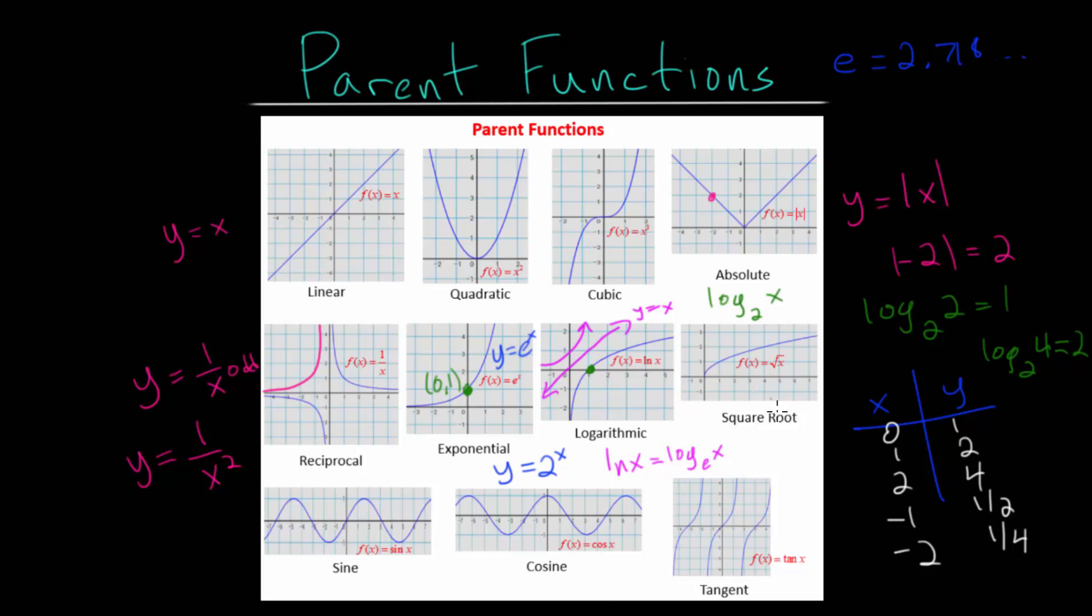And then we come to the root functions. This is the square root function. Notice that it's not defined for negative values since those outputs would be imaginary numbers. And on the xy coordinate plane, we cannot graph those imaginary numbers. There are ways to graph imaginary numbers, but not with the standard xy coordinate plane, which deals with real numbers. So this is the square root of x. We could also look at the cubed root of x, the fourth root of x, the fifth root of x, and so on.